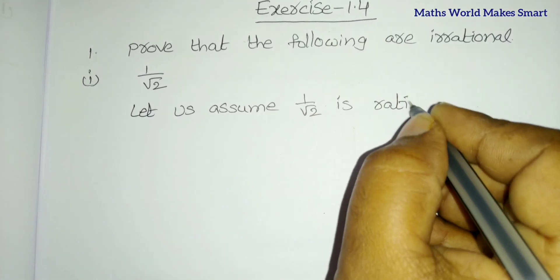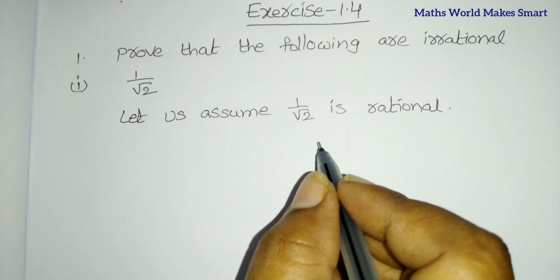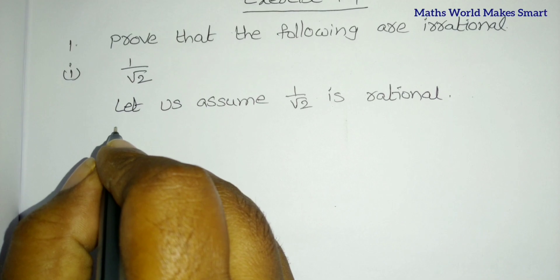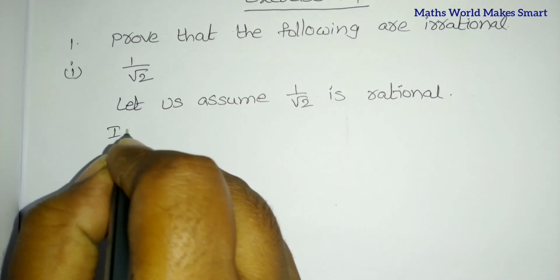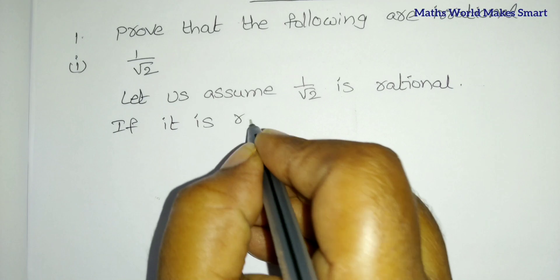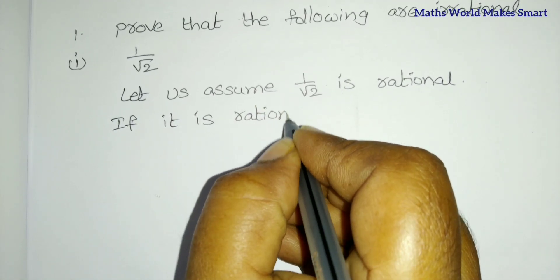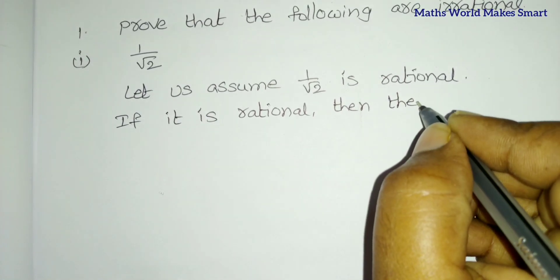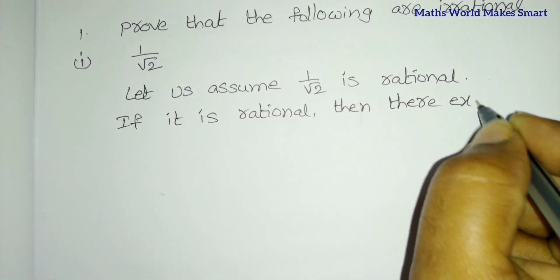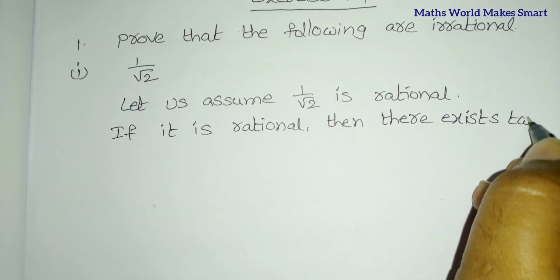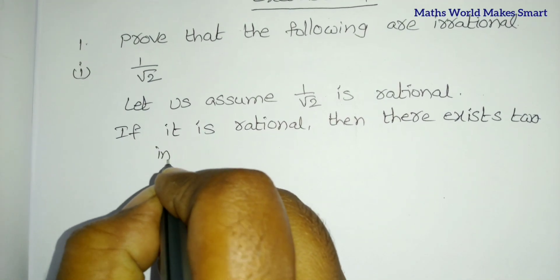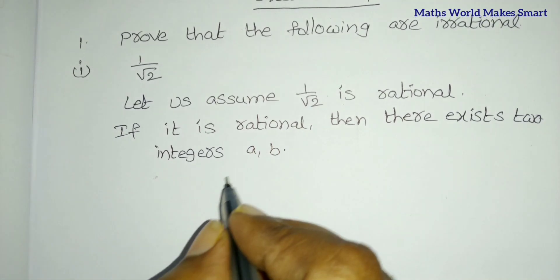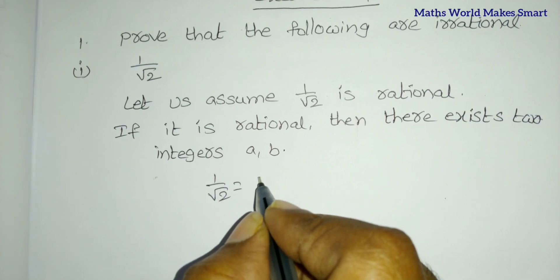If it is rational, we write it in the P by Q fraction formula. So, if it is rational, then there exist two integers A and B, and 1 by root 2 is equal to A by B.